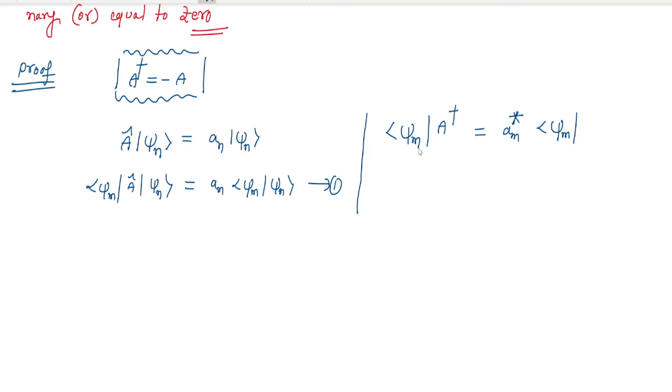Then I'm going to multiply this equation by ket vector. Then I got ⟨ψₘ|â†|ψₙ⟩ = aₘ*⟨ψₘ|ψₙ⟩. This is equation number 2. We know the definition of anti-Hermitian operator.